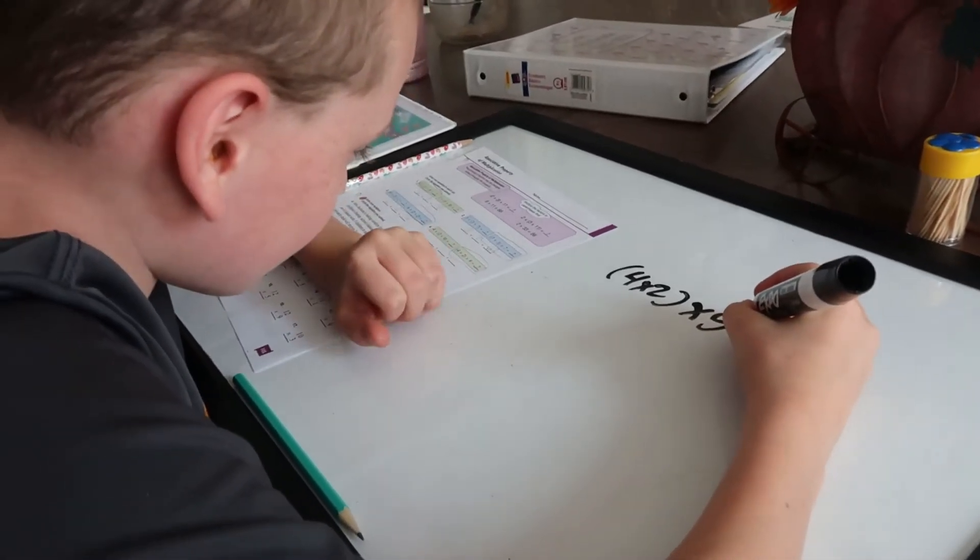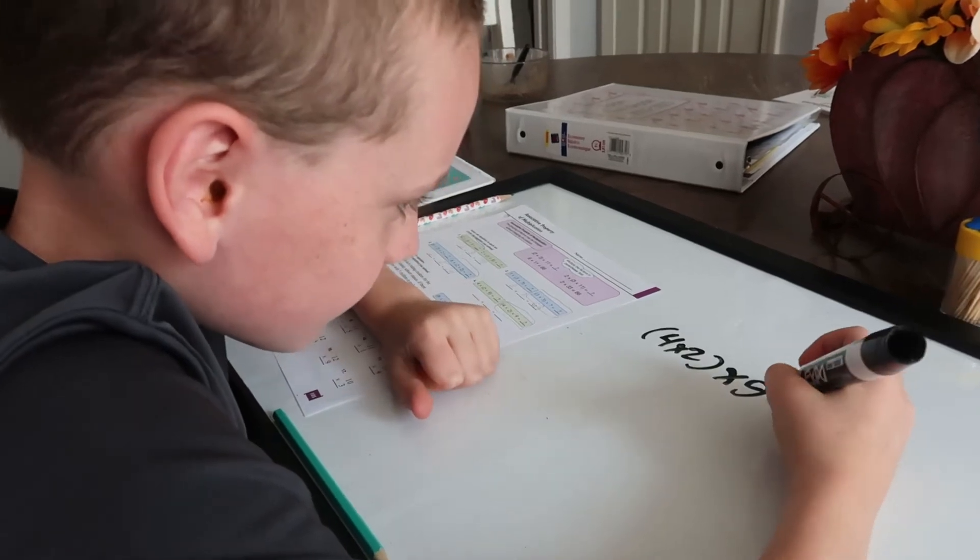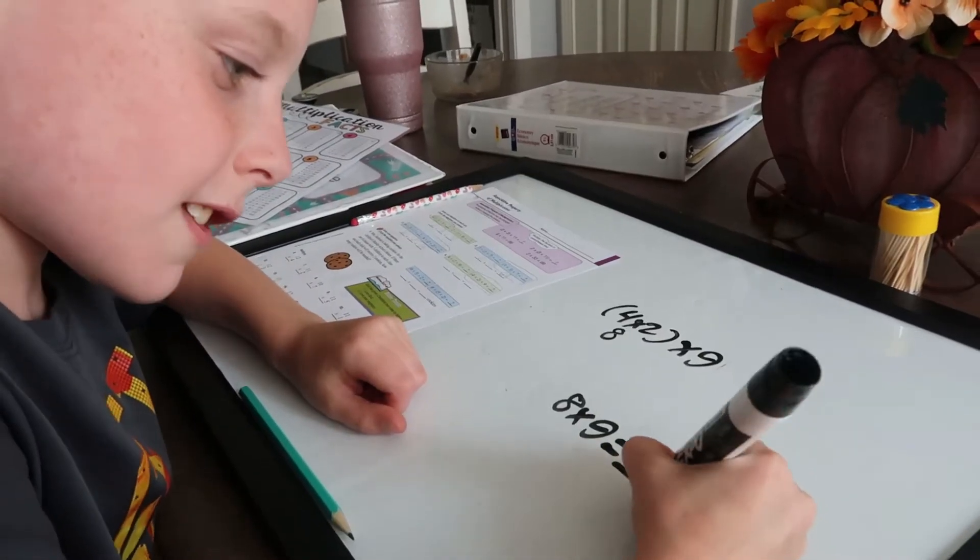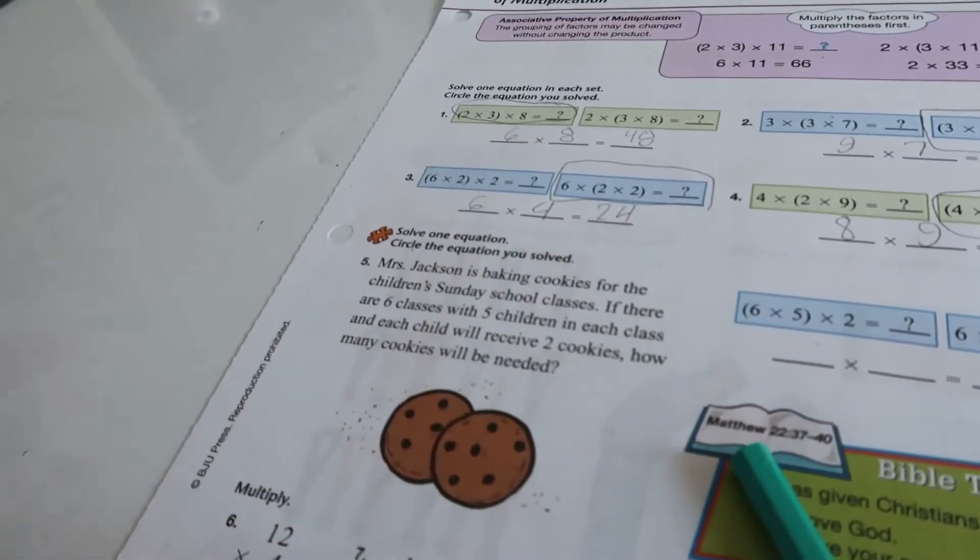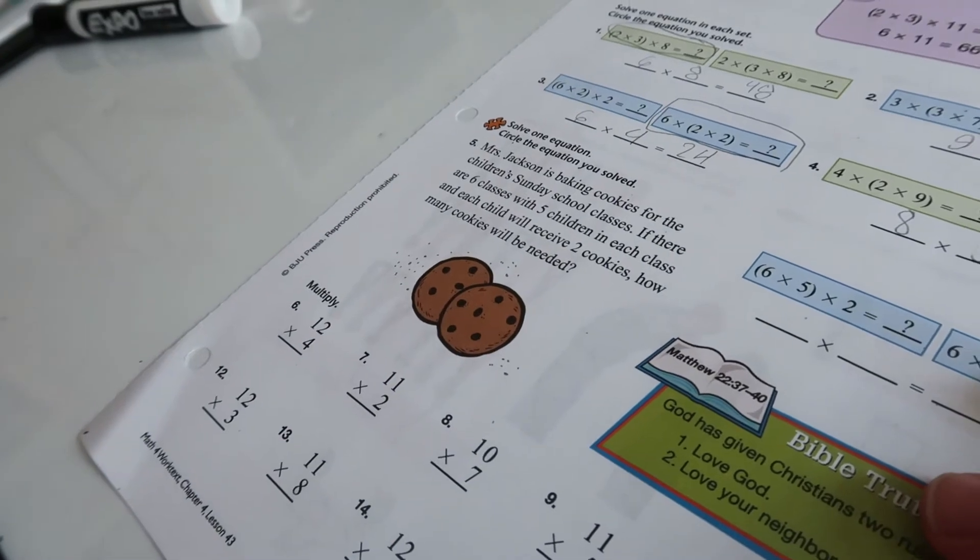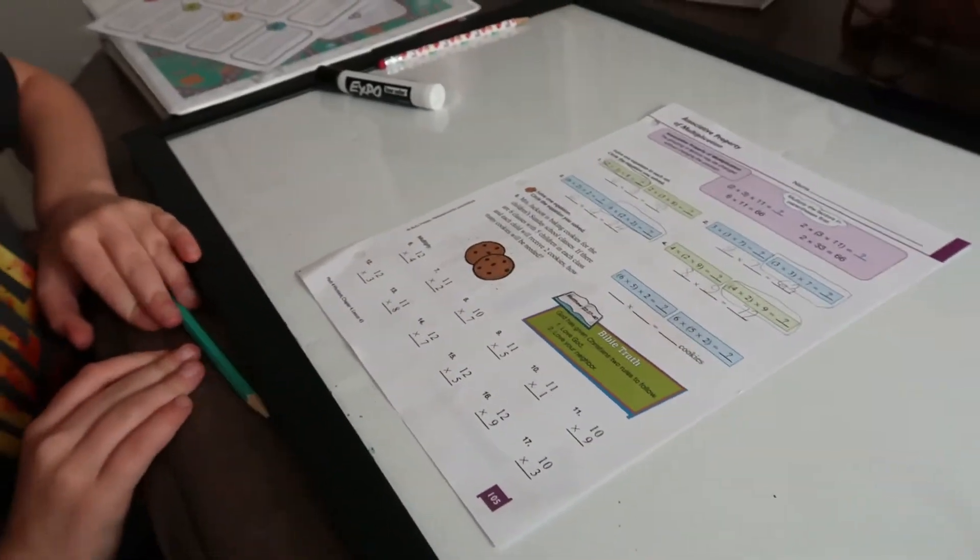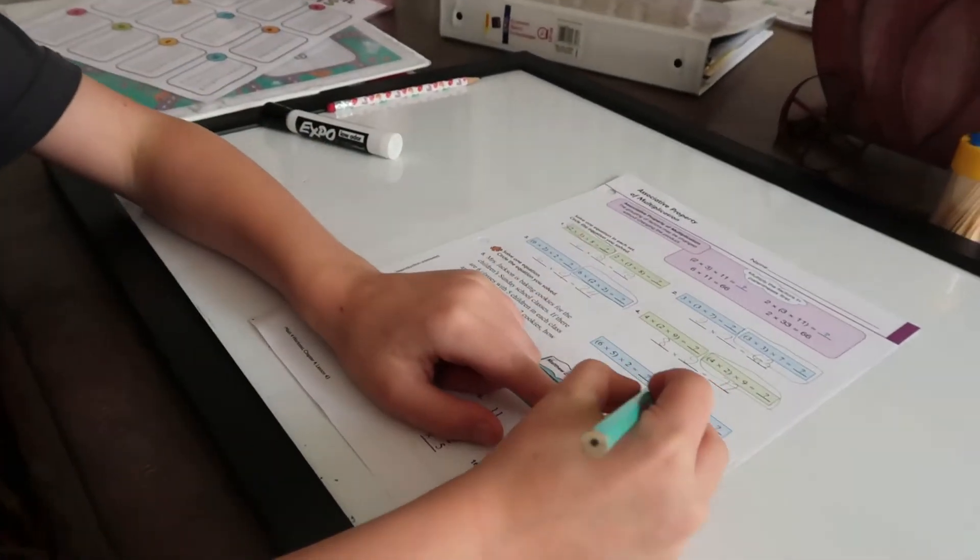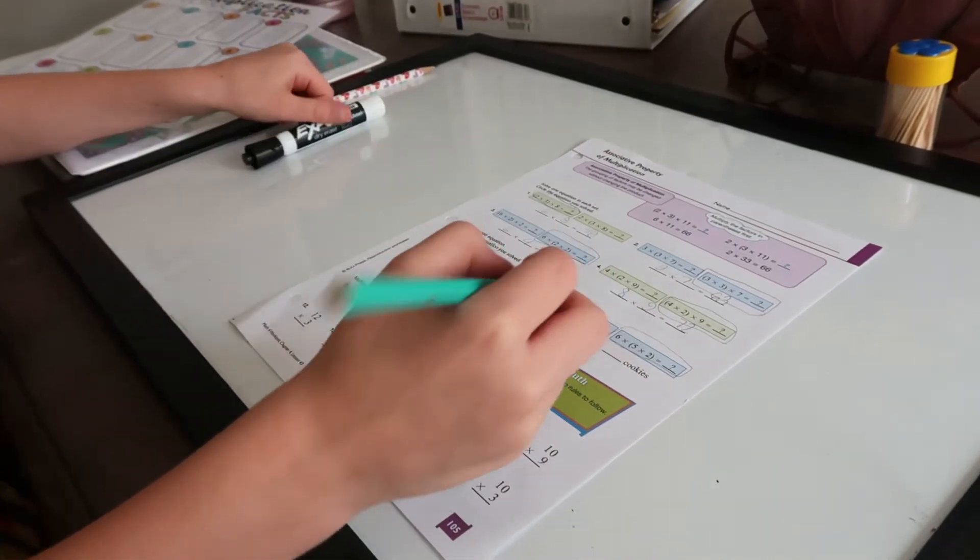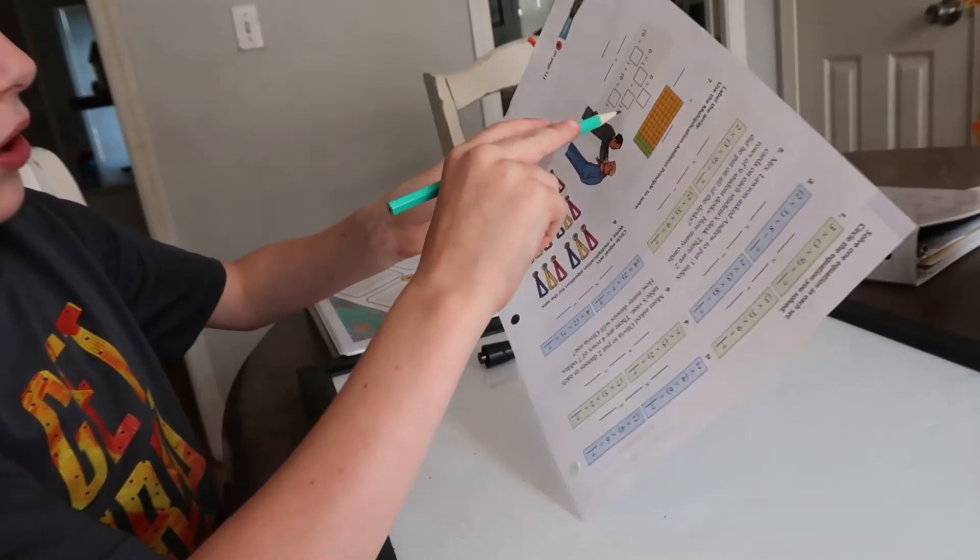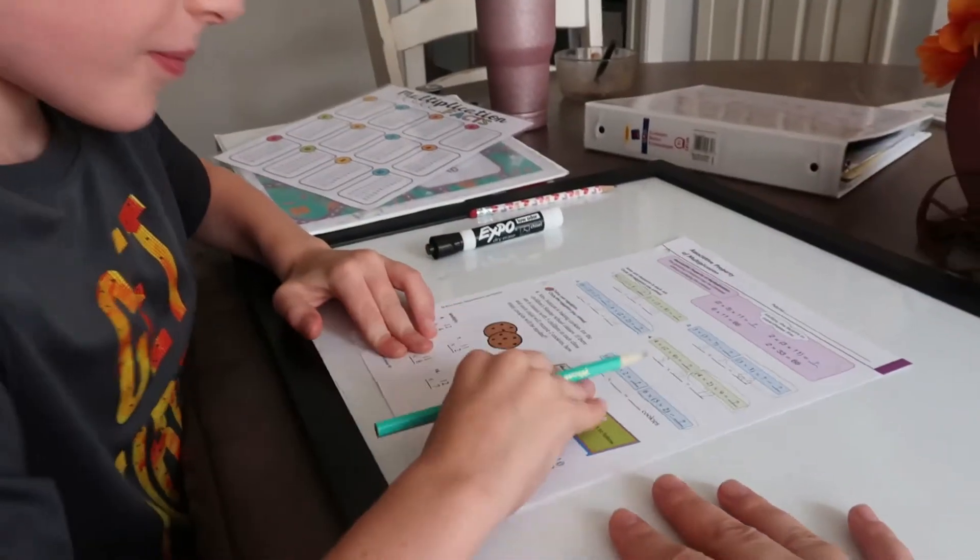Mommy, next time can we do a day in the life video? Maybe. So, what do you do first? Good job. Mrs. Jackson is baking cookies for the children's Sunday school classes. If there are six classes with five children in each class and each child will receive two cookies, how many cookies will be needed?